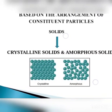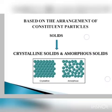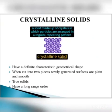Let's take a look at crystalline solids. A crystalline solid is made up of crystals in which particles are arranged in a regular repeating pattern. It has a highly ordered structure with a periodical arrangement of constituent particles.